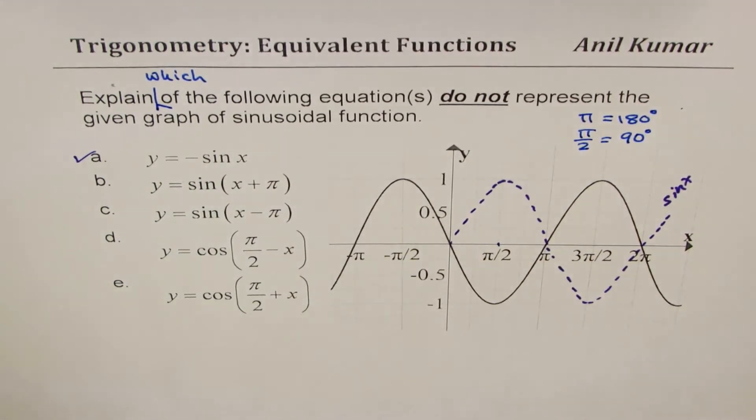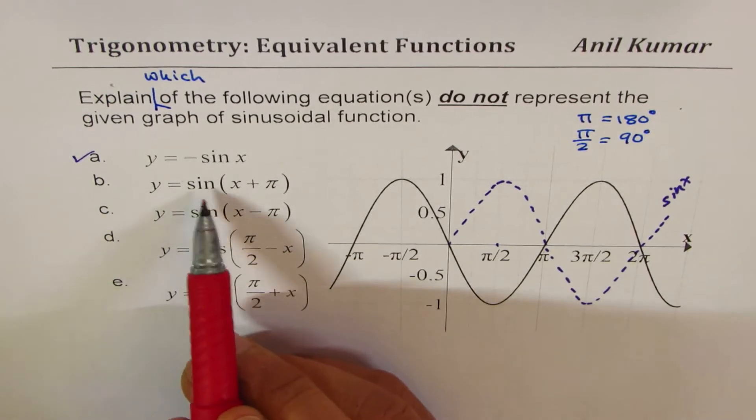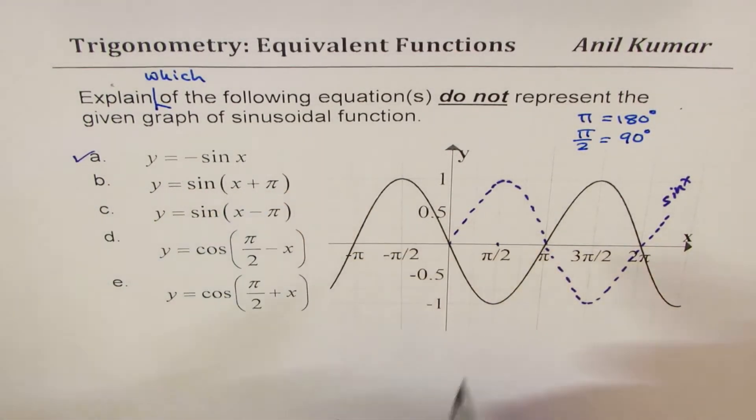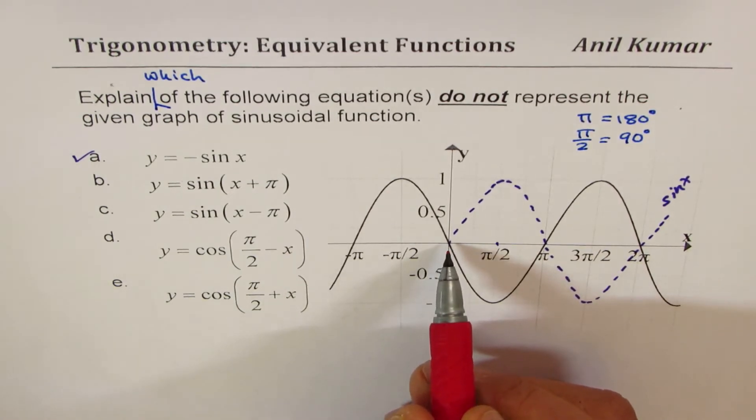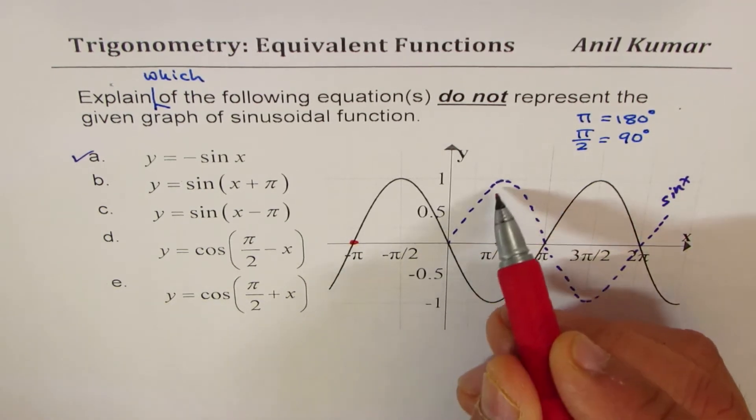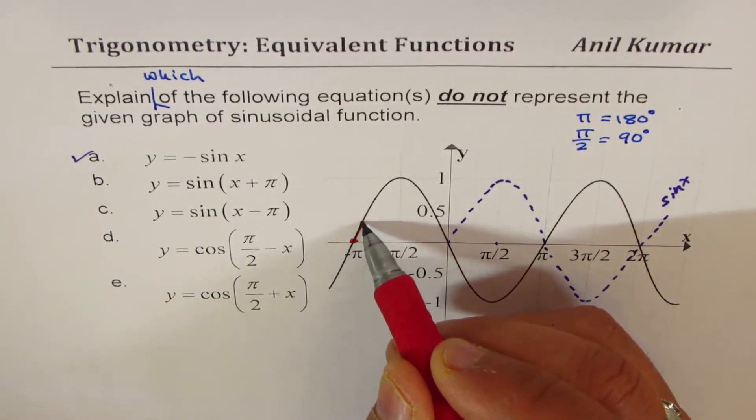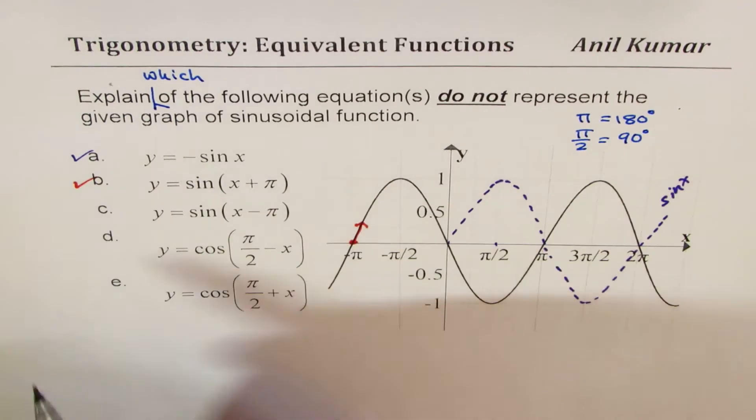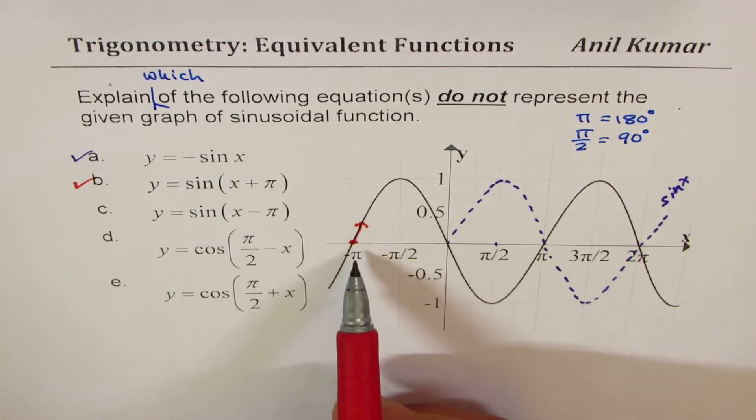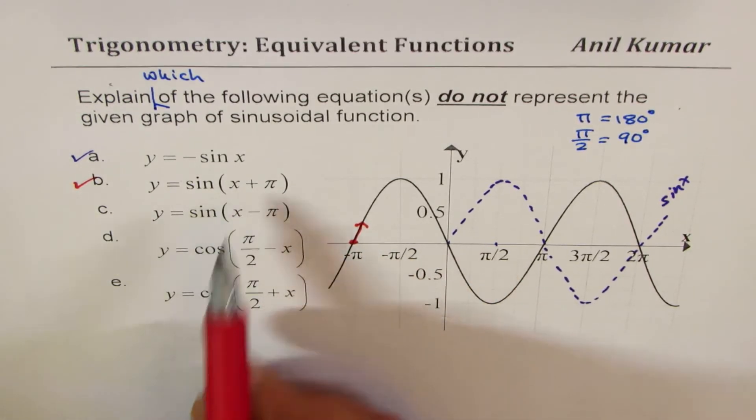The second equation is y equals sine of x plus pi. Now when we say x plus pi, that means the wave starts pi units before, so that is okay. And sine wave actually starts like this, so it goes up, so that seems to be perfect. So this equation is also correct; the wave starts pi before zero, right, so it is leading.